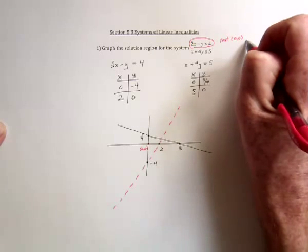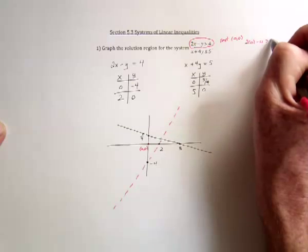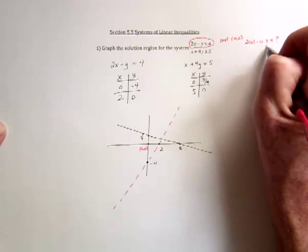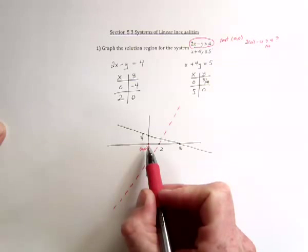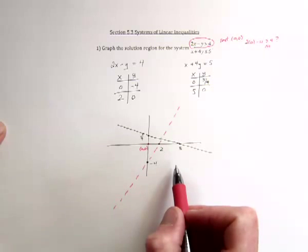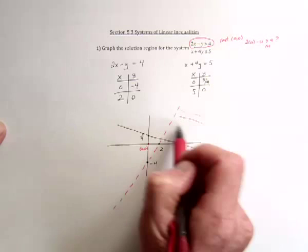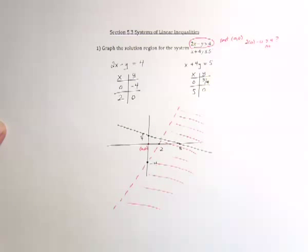that would be 2 times 0 minus 0, is that bigger than 4? So is 0 bigger than 4? No, that's not true. So the side where that came from is going to make the inequality false. The other side would make it true. So everything to this side of the dotted line is going to make the first inequality true.